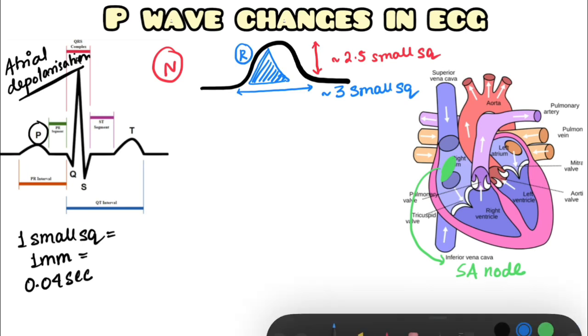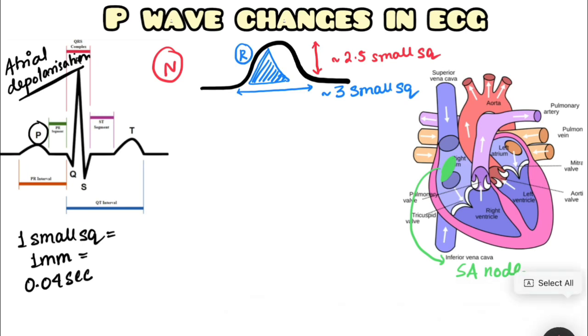This blue represents right atrial depolarization, and just after that starts the left atrial depolarization. Together they form the P wave. P wave abnormality can be of two types.